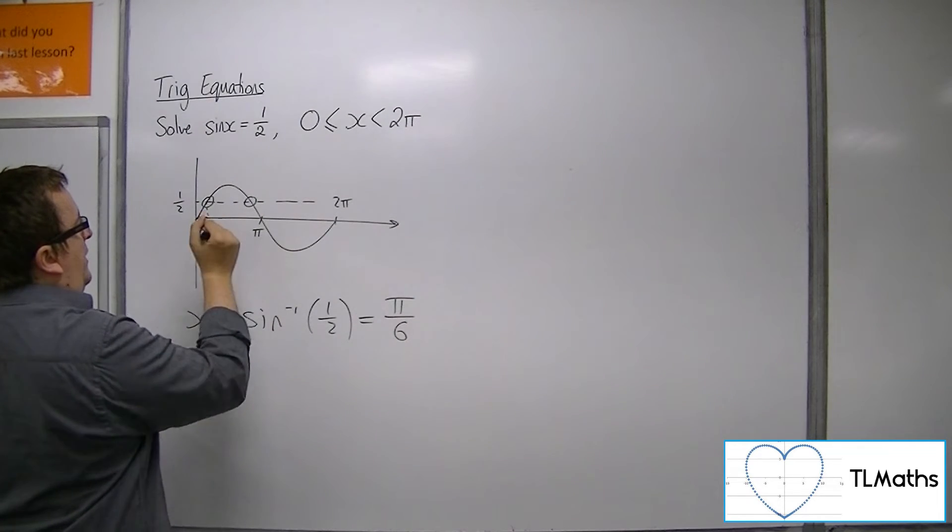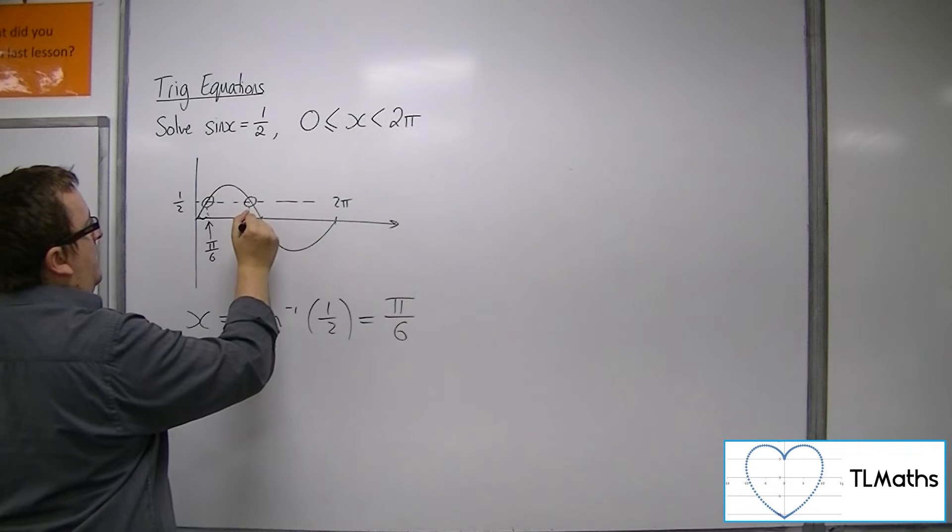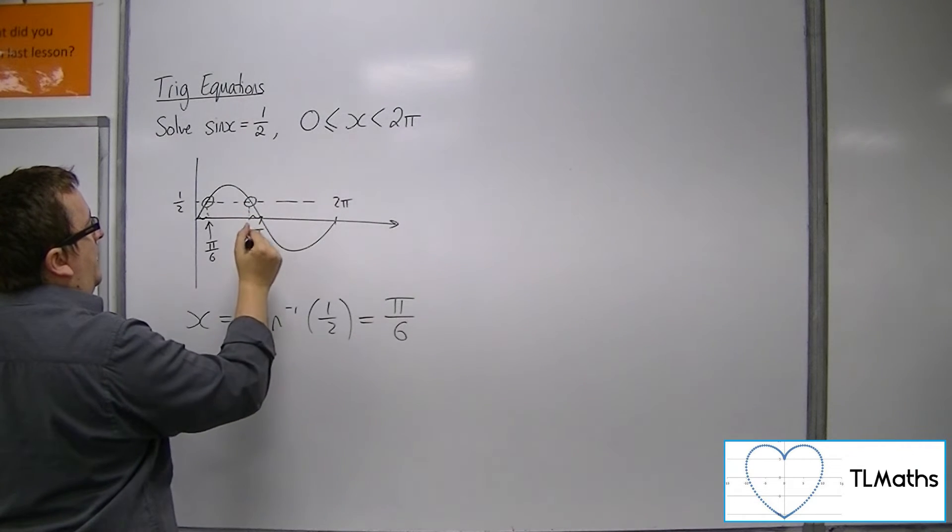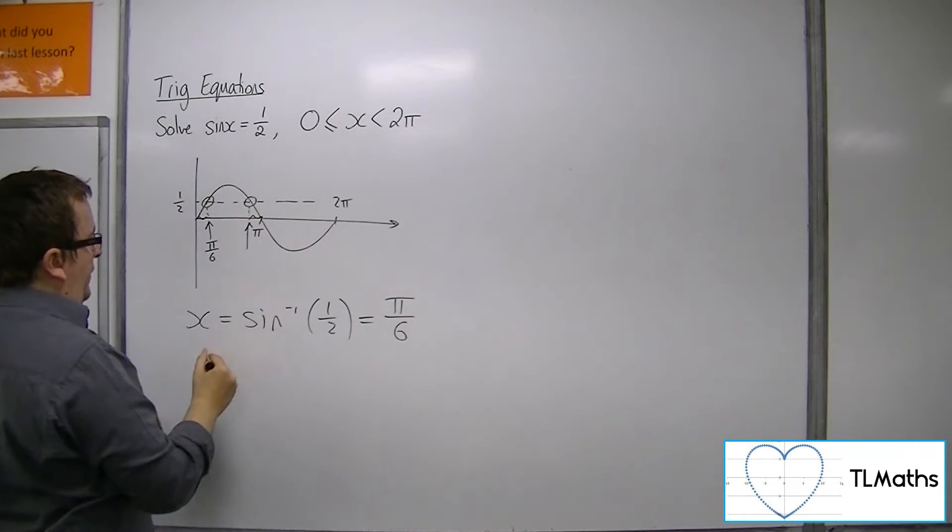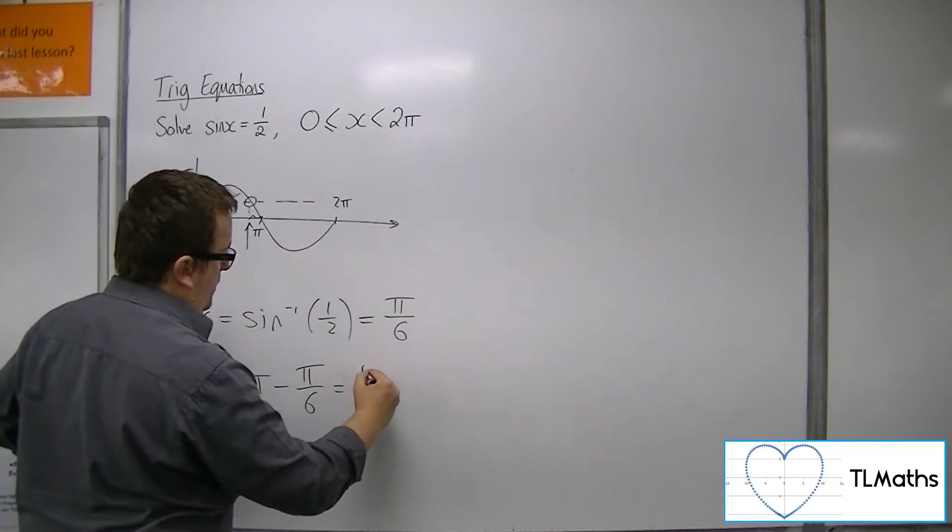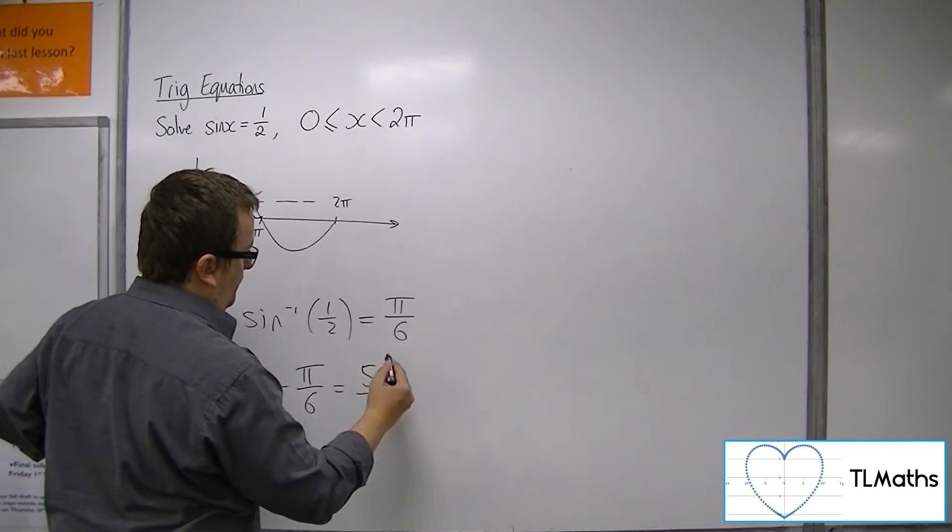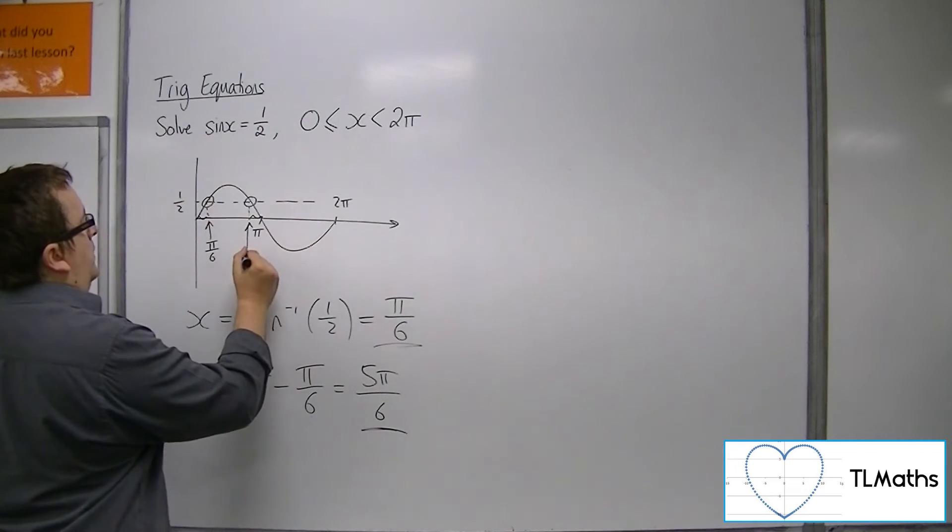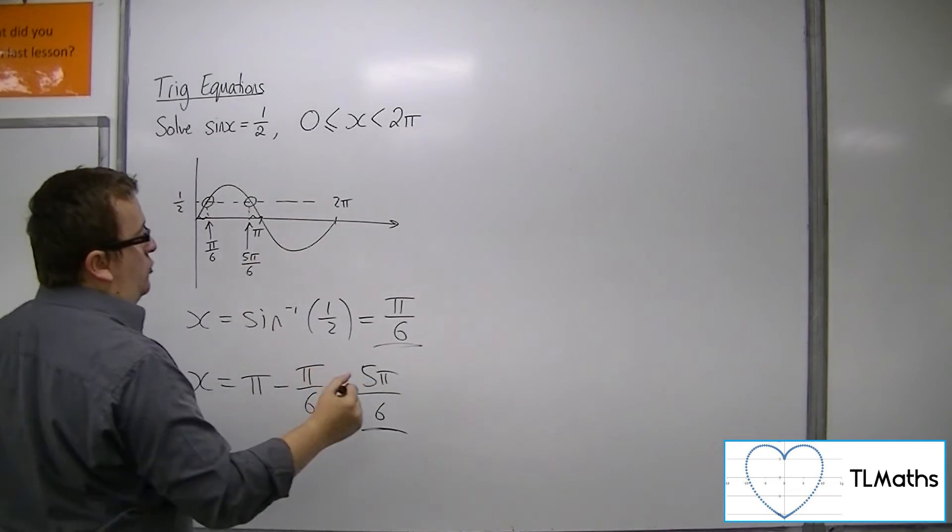Now if that distance is pi over 6, then that distance must be pi over 6. So you can find the second solution by subtracting pi over 6 from pi, which is 5 pi over 6. So there's your second solution.